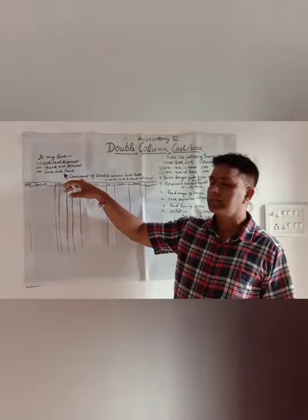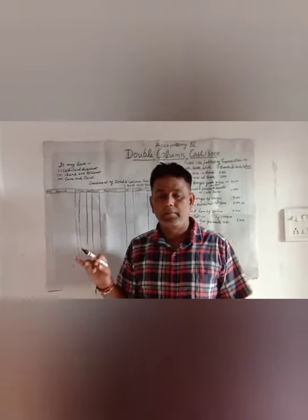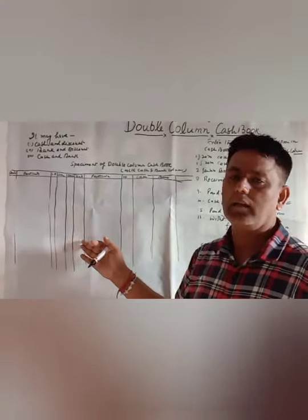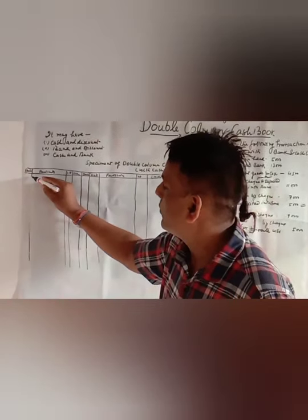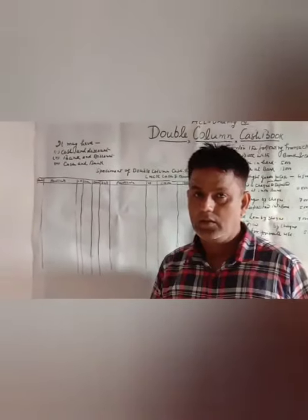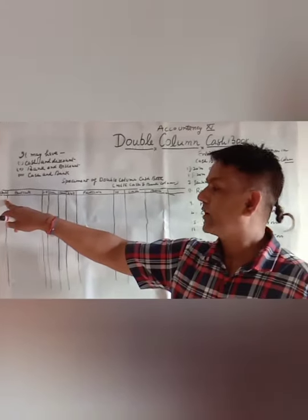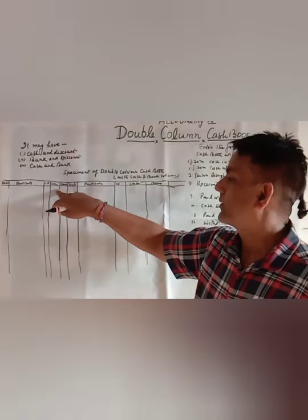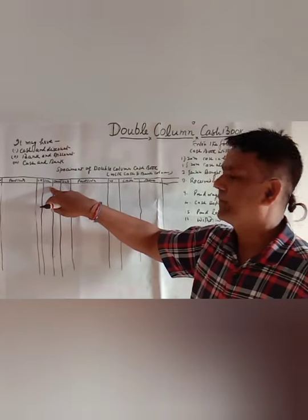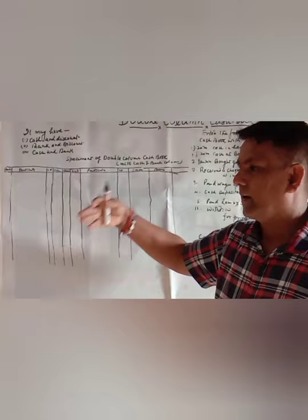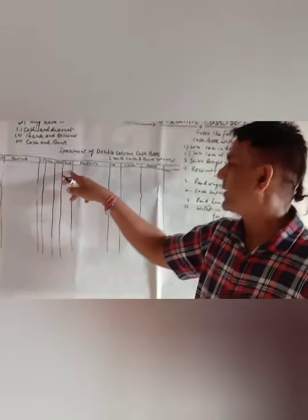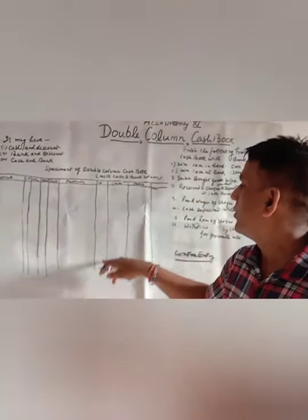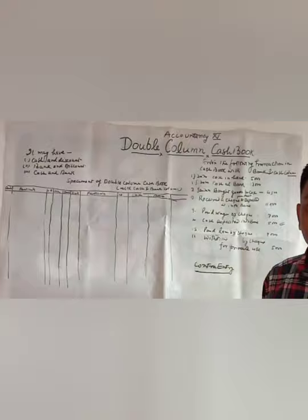Let me show the specimen of the double column cash book. It is nothing very new — we only add a bank column on both sides. The columns are: first is date, second is particulars, third is ledger folio, fourth is cash column, and fifth is bank column. The same applies to the credit side: date, particulars, ledger folio, cash column, and bank column.